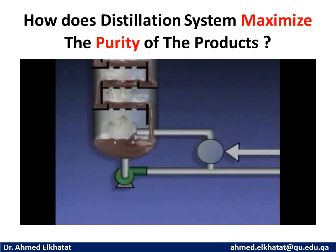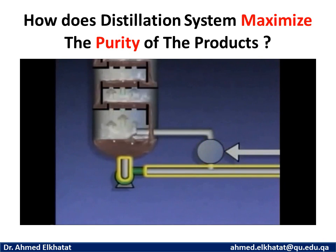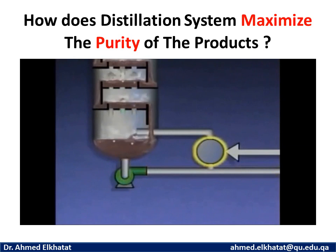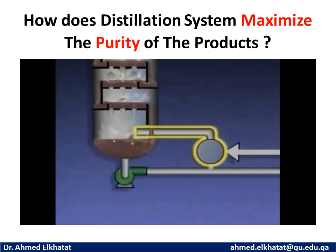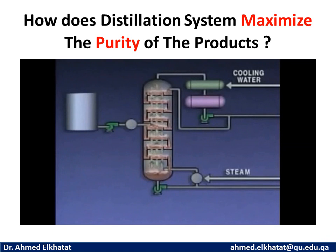Another method used to maximize product purity is called reboiling. The bottoms liquid drawn off from the tower is sent to a reboiler, while the rest is sent to storage or other units as the tower's bottoms product. The reboiler heats the liquid it receives so that a mixture of vapors and liquid is formed. Either vapors or the mixture of vapors and liquid is then reintroduced into the tower. The hot vapors cause any lighter fractions in the liquid at the bottom to vaporize and move up the tower, which reduces the amount of lighter fractions in the bottoms product. The reboiler provides the major portion of the heat required to make the distillation process work.